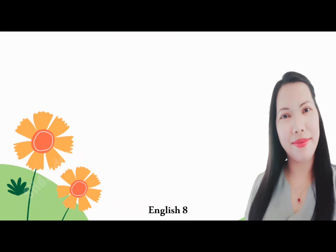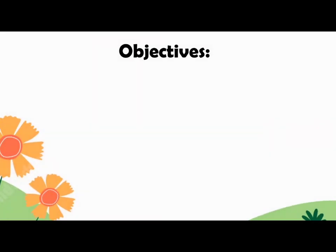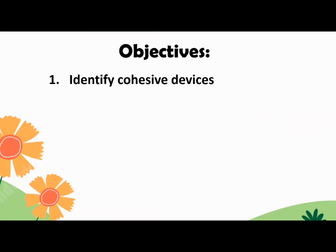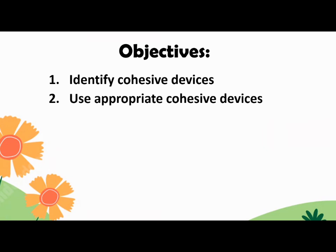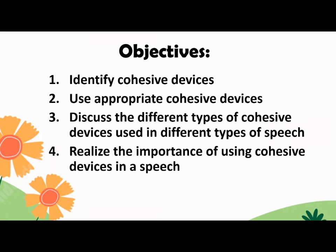Our video lesson for today is based on the most essential learning competency in English 8 Quarter 3, which is Use Appropriate Cohesive Devices in Various Types of Speech. The objectives of this lesson are: Identify Cohesive Devices, Use Appropriate Cohesive Devices, Discuss the different types of cohesive devices used in different types of speech, and realize the importance of using cohesive devices in a speech.